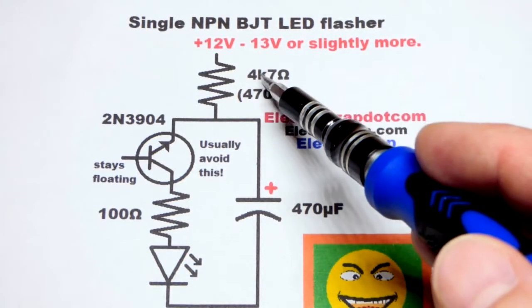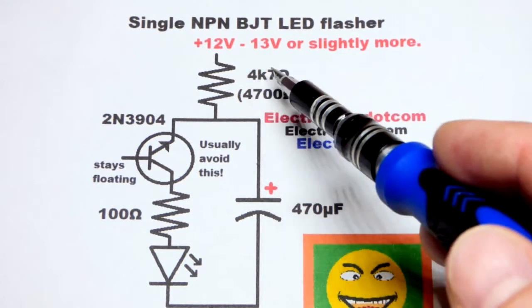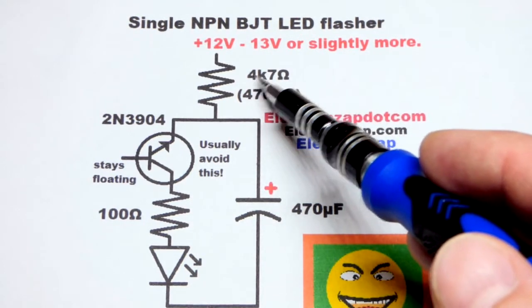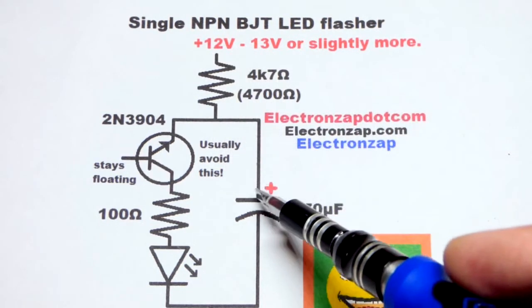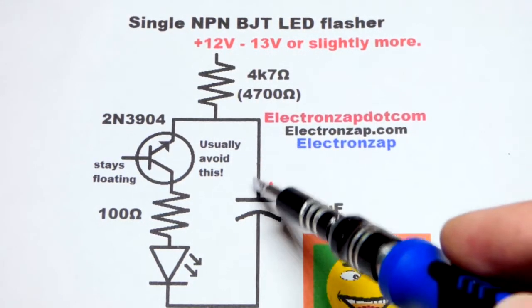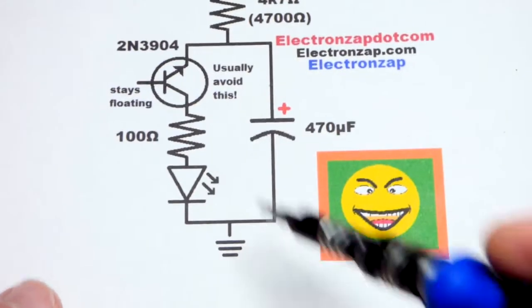They put the K there because you might miss a decimal point and just think it's 47 ohms. And so they put the K there for kilo ohms instead. But in any case, we got that high value, relatively high value charging the capacitor until the pulse comes down.